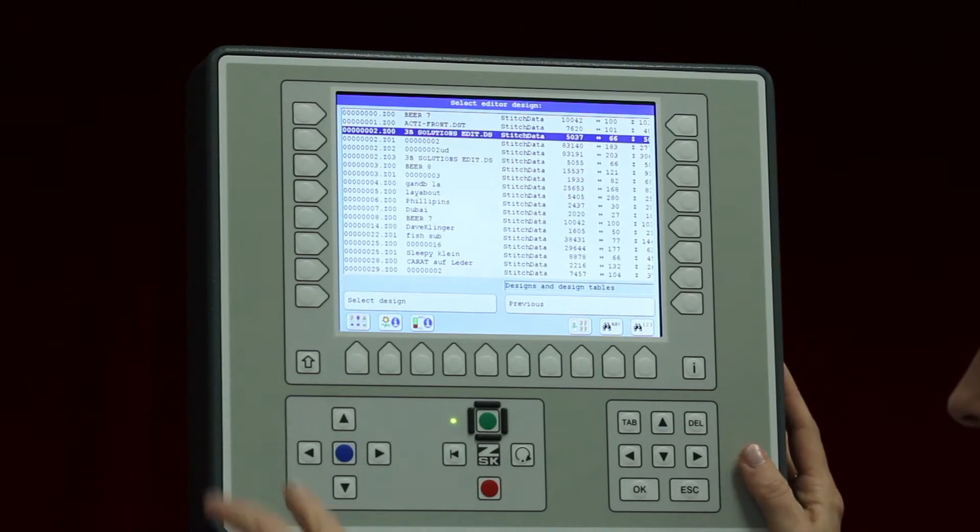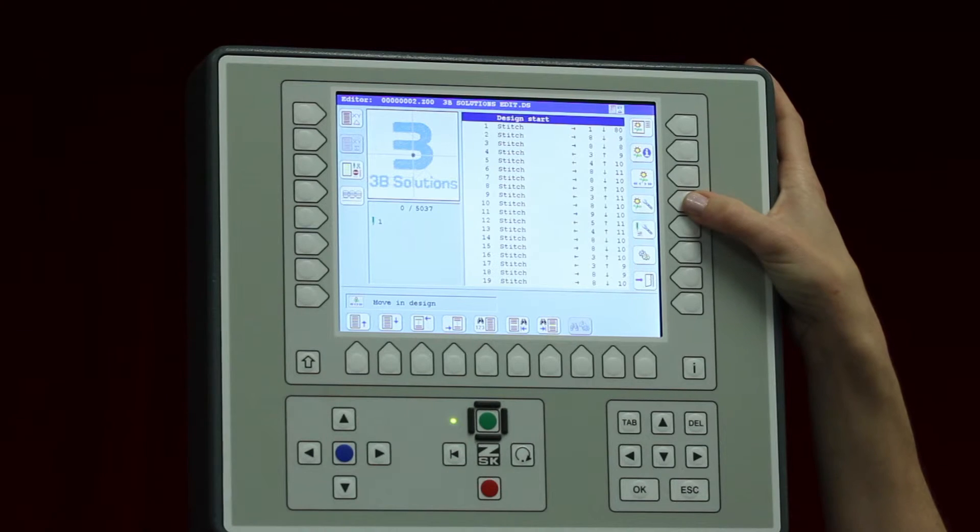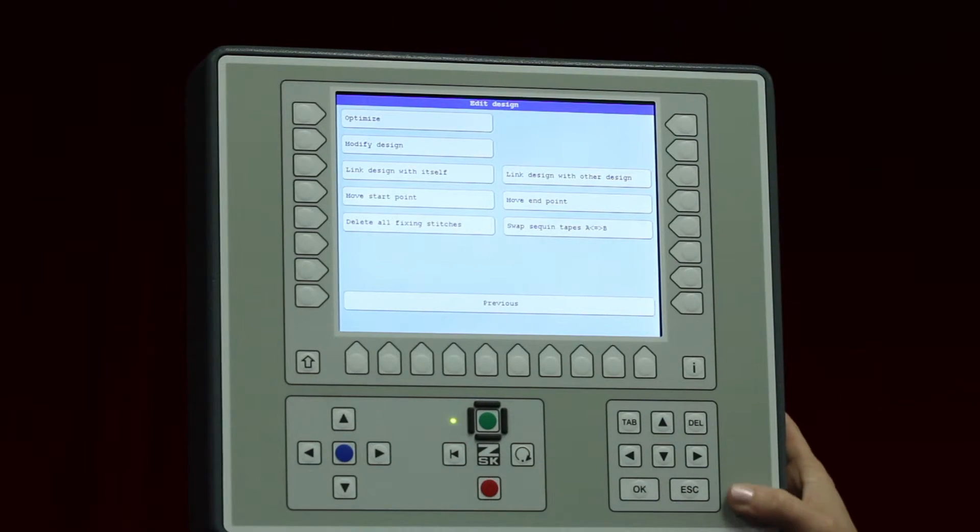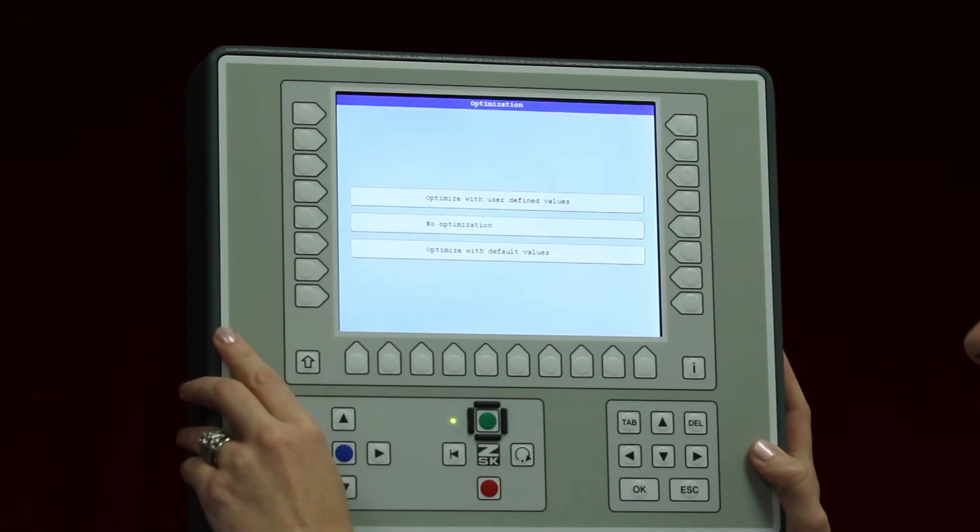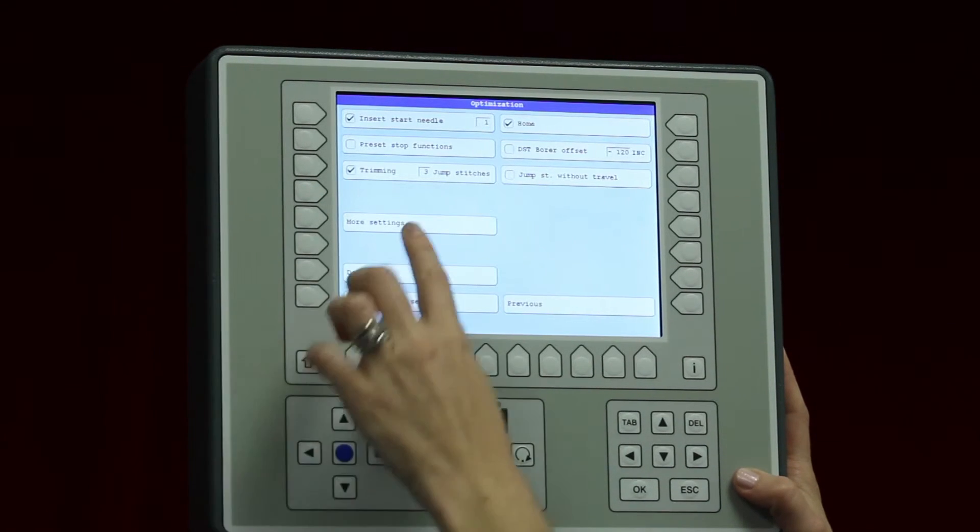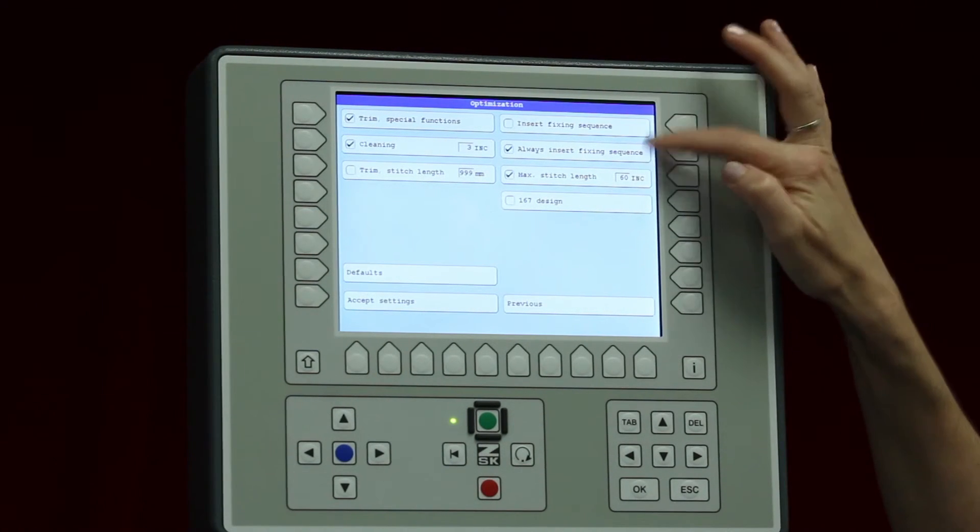So I scroll down to my design, I'll select the design and here on the right hand side I will choose the editor - or I'm sorry the edit design - then I will choose optimize. And in optimize I choose optimize with user defined values, click on that, then I want to go to more settings.